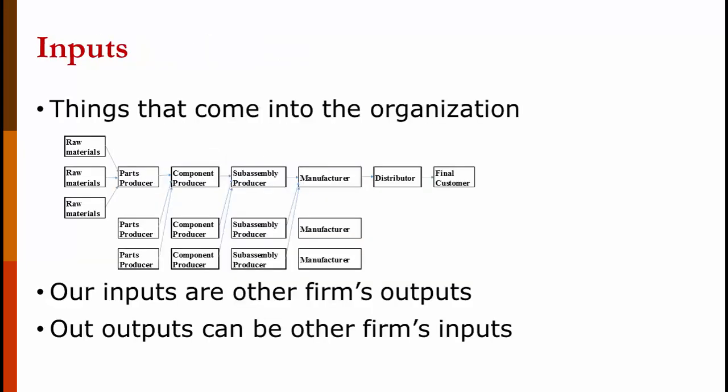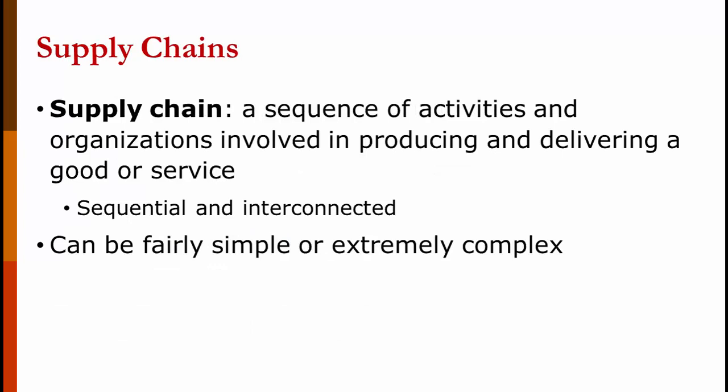On the screen is a simple diagram of a supply chain, showing how things come into an organization. You buy stuff from many different companies — we call that your supply chain — and then you sell to other companies. The vast majority of companies sell to other companies rather than the end consumer. A more formal definition of a supply chain is a sequence of activities and organizations involved in producing and delivering a good or service.